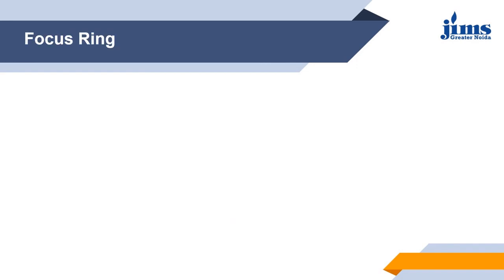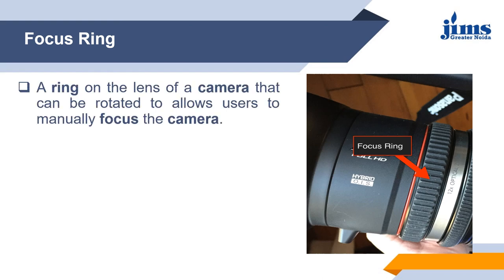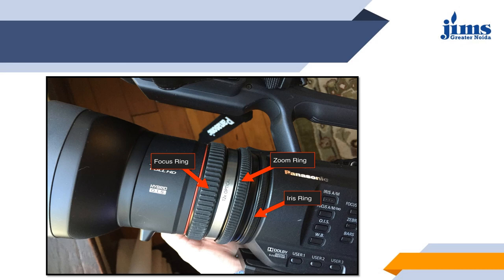The focus ring is a ring on the lens of the camera that can be rotated to allow users to manually focus the camera. To do manual focus, first make sure the camera is set to manual focus rather than autofocus. Then zoom in as tight as you can on the subject you wish to focus on, and adjust the focus ring until the picture is sharp — turn the ring clockwise for closer focus and anticlockwise for more distant focus. Here we can see all three rings: focus ring, zoom ring, and iris ring.